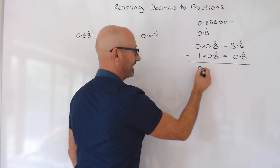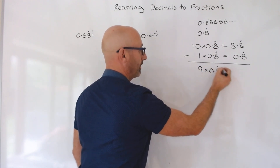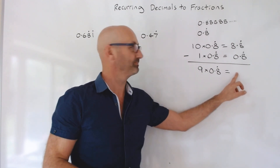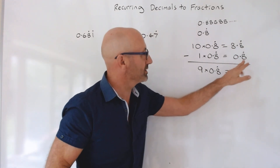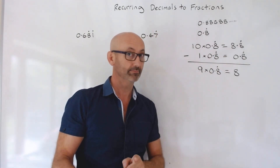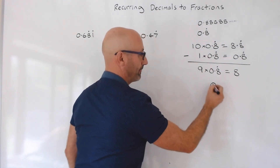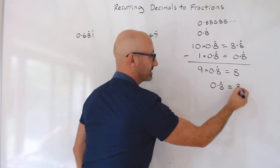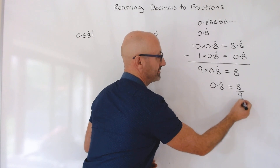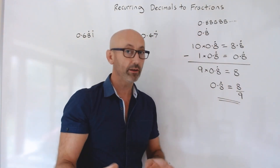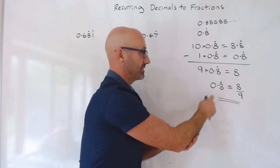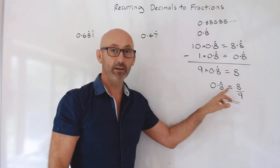So 10 take 1 is 9. Nine of them equals — well, if you take that away, what are you going to end up with? 8. Because all those 0.888s cancel out when you take them away. You should know, if you're going for higher, that the opposite of times is divide. So the 9 is times on that side, so divide both sides by 9 — which gets rid of the 9 on that side. So 0.8 recurring equals 8 over 9.